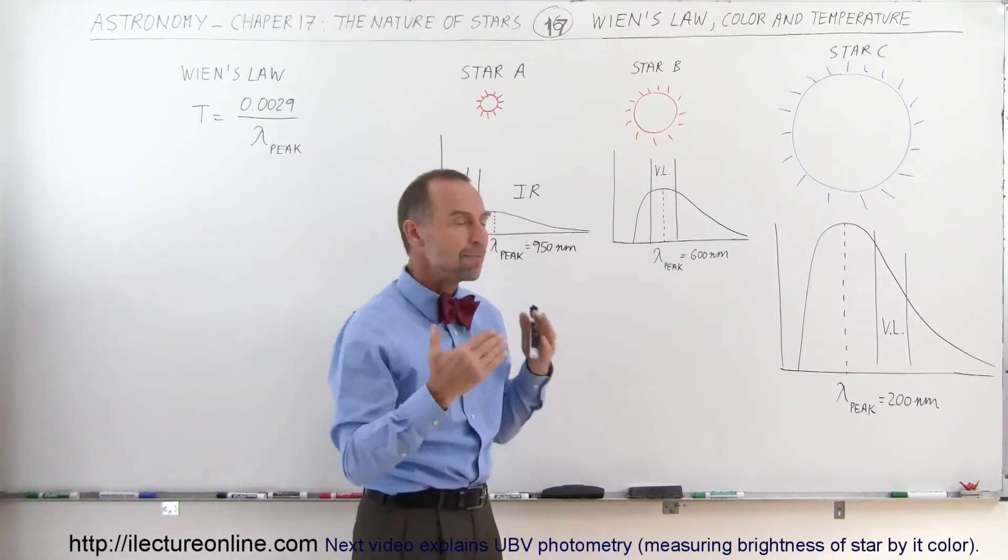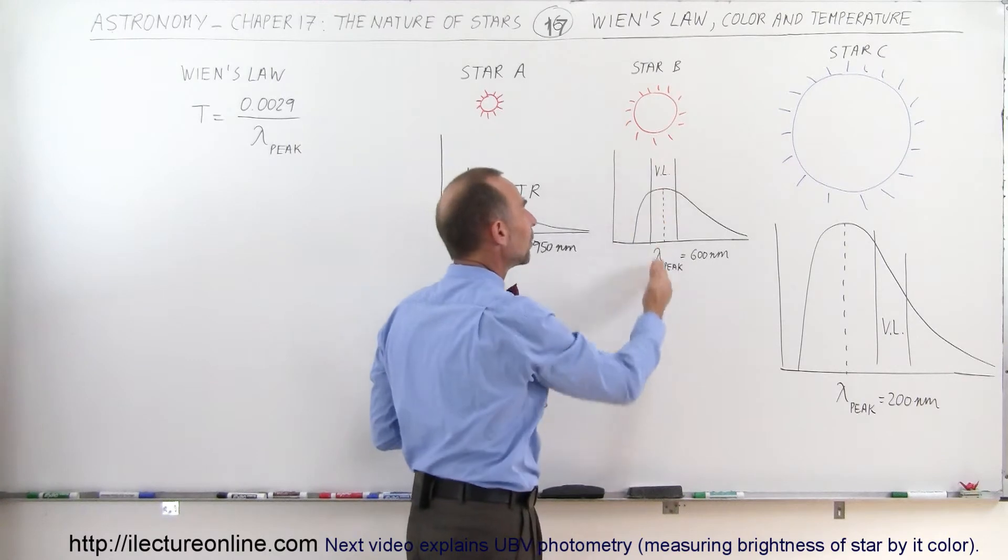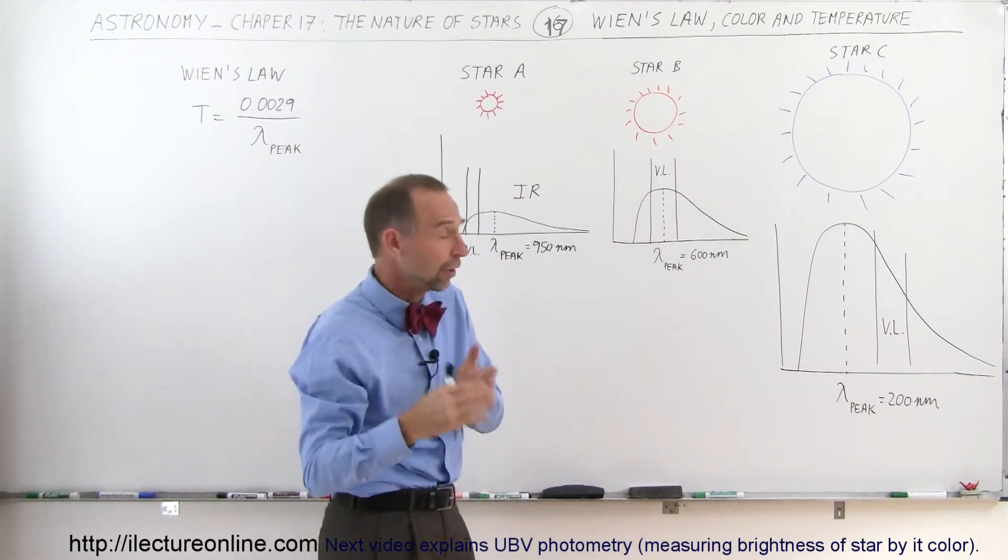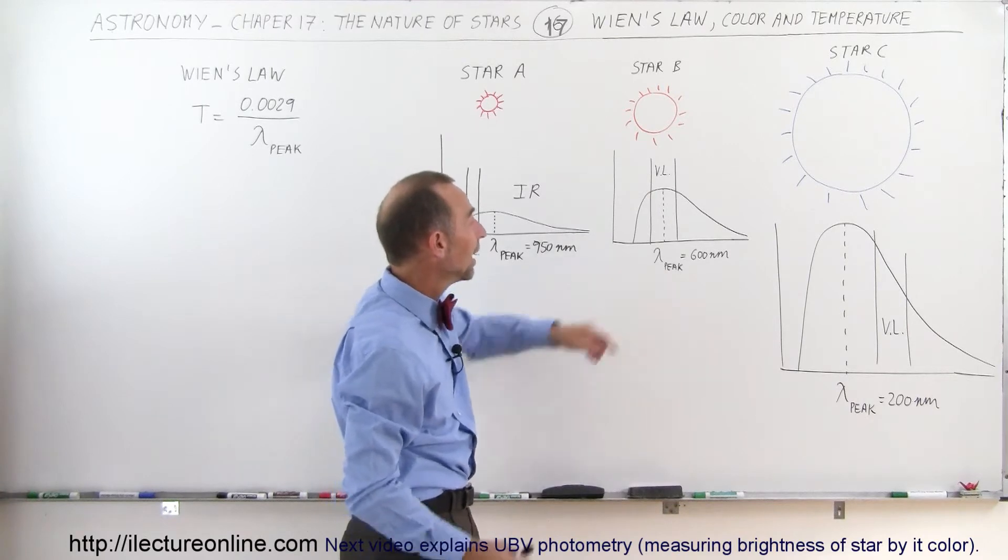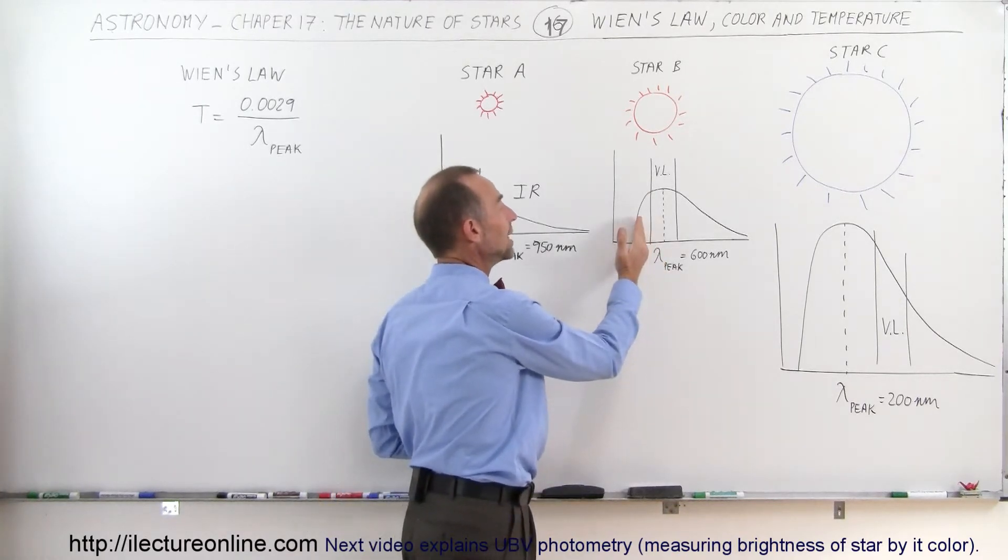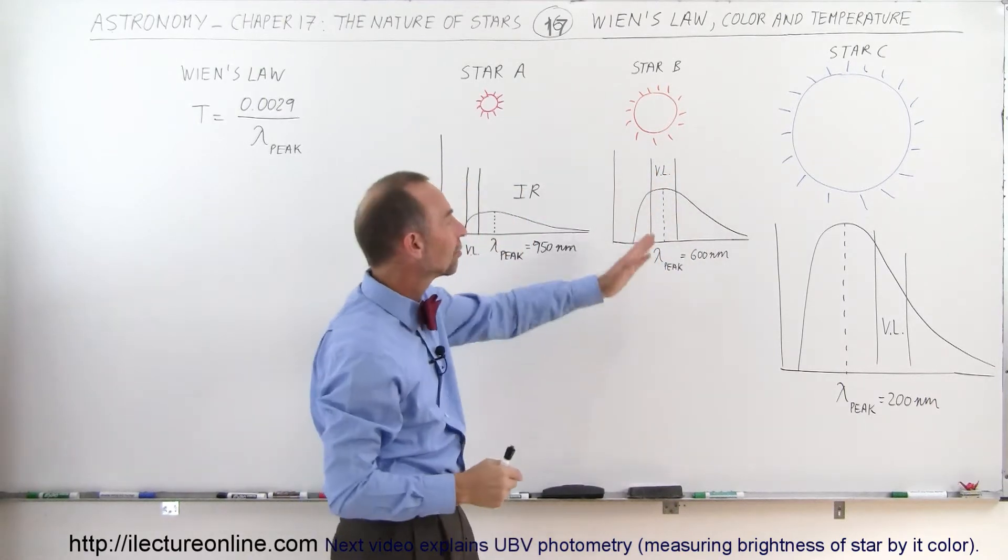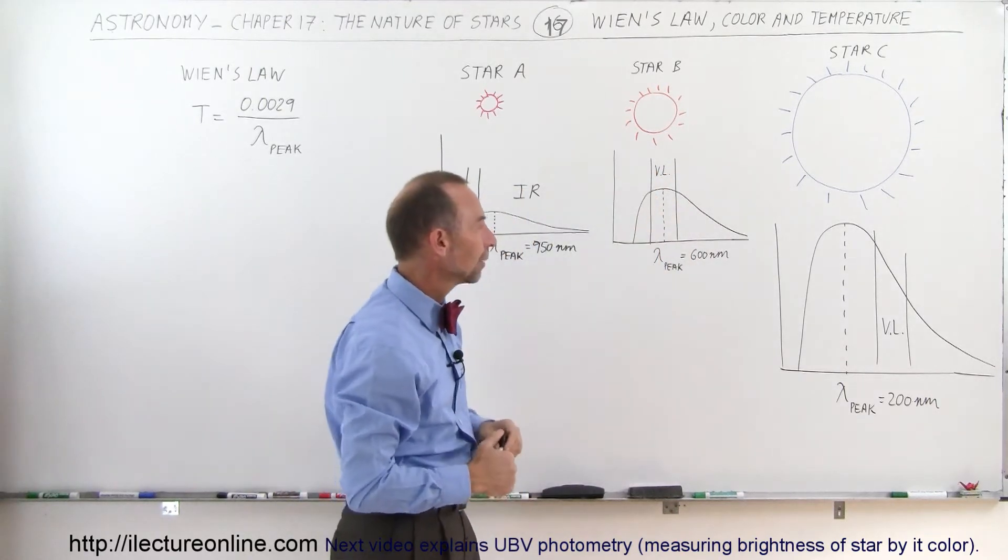For a star like the Sun, the peak wavelength falls in the visible light range—for example, let's say 600 nanometers, which is very close to what the Sun puts out. You can see there's some UV and some infrared, but the greatest amount of radiation falls in the visible light range.